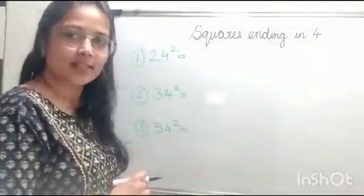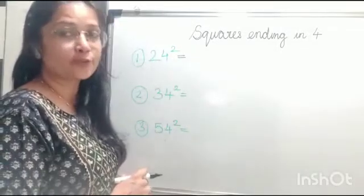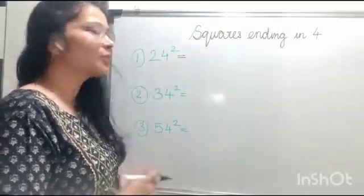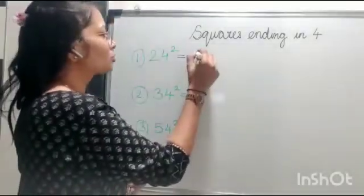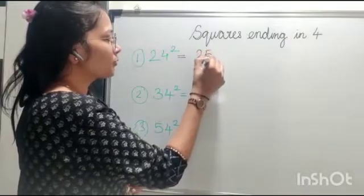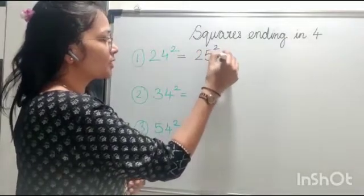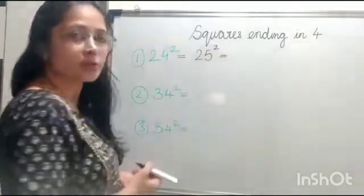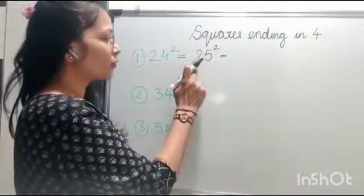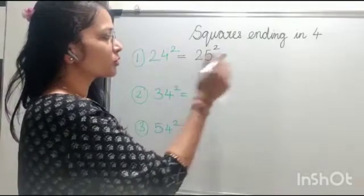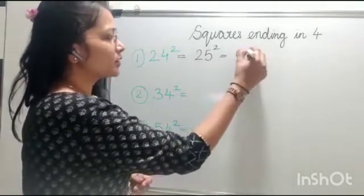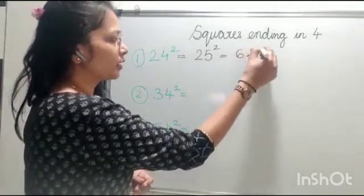For any square ending in 4, you have to first find the square ending in 5. So the next square after 24 is 25. Let's find 25 squared. So 25 squared: 2 into 3 is 6, and 5 squared is 25 — giving us 625.